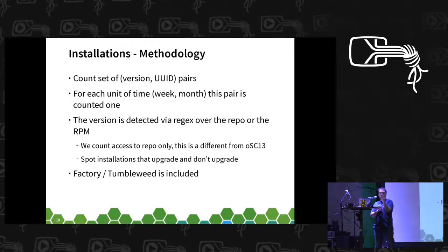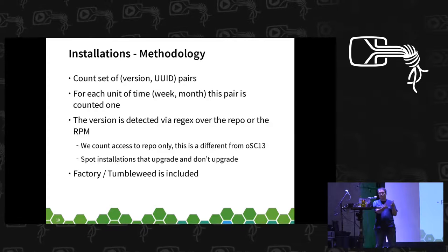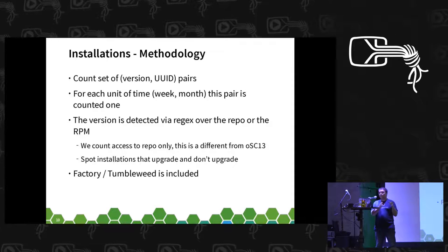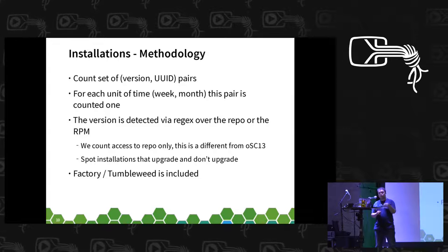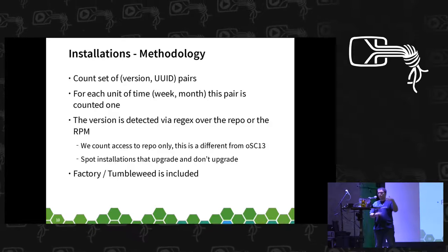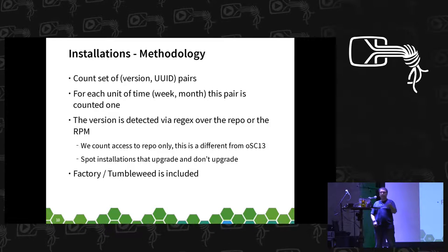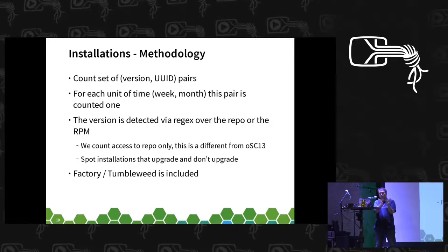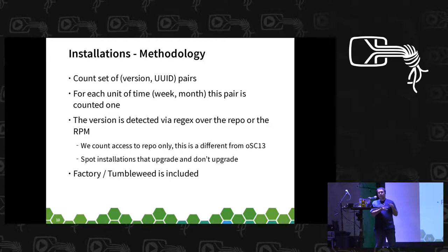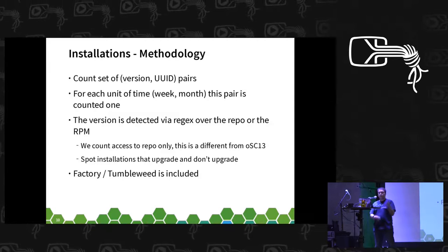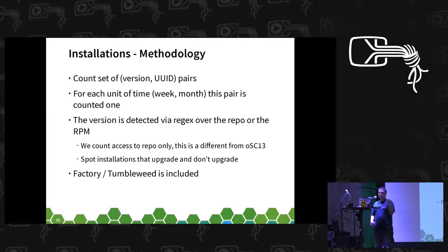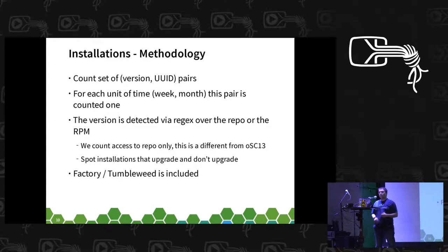Zypper provides some additional bits — the package or repo it is accessing, and the medium used to install the machine. For this analysis, I take the version of the repository being accessed to identify whether the machine is using a 13.2 repo or a 13.2 package — RPM, SRPM, delta, whatever — and I pair that with the UID. I then create a dataset with a normal set in a time slice, so for a weekly analysis I count each version-UID pair only once, even if that machine made 70 accesses during the period.